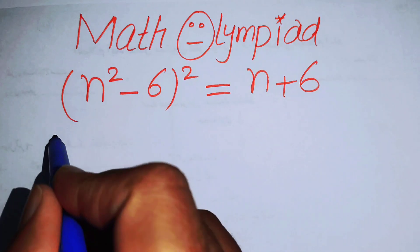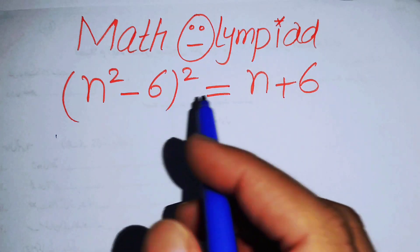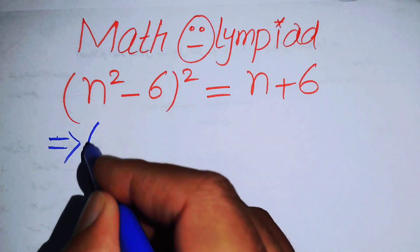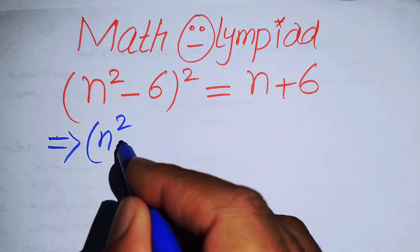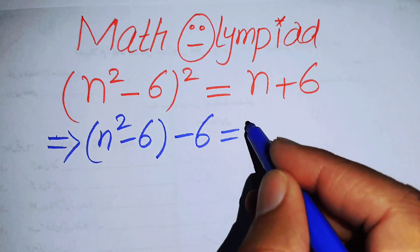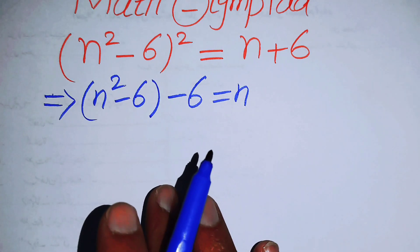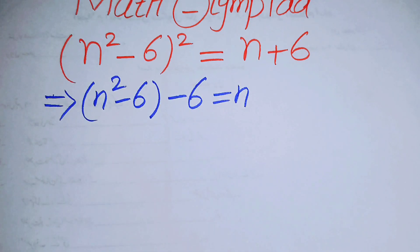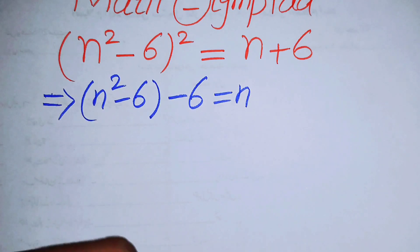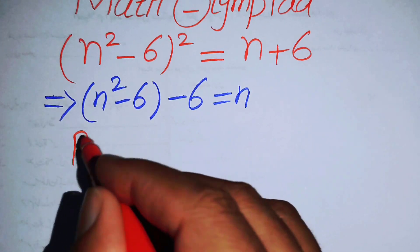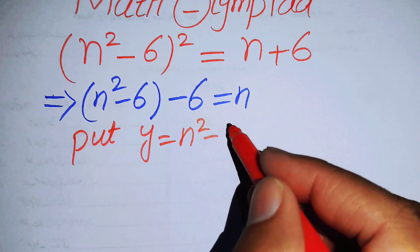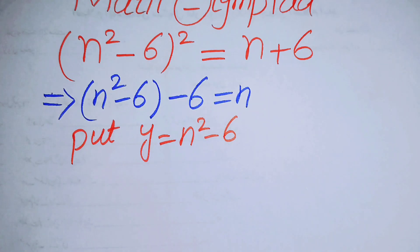The very first thing we are going to do is move the 6 to the left hand side and write it as n² - 6 - 6 = n. In the next step we make some simplifications by putting y = n² - 6.